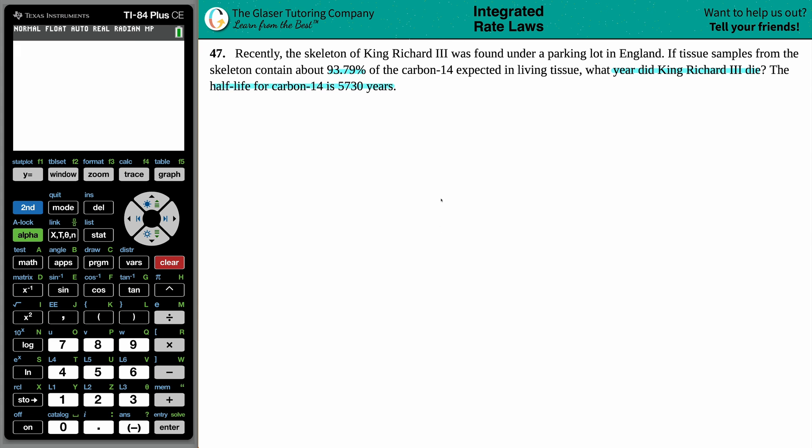Well, now that I got that out of my system, let's answer the question, shall we? All right, so poor King Richard unfortunately passed away and was found under a parking lot. I did actually look this up and it is true. So, hey, you find new things every day. But anyway, they said that basically the tissue samples from the skeleton contained about 93.79% of the carbon-14 expected in living tissue. And we want to just find out what year did King Richard III die? And the half-life for carbon-14 is 5,730 years.